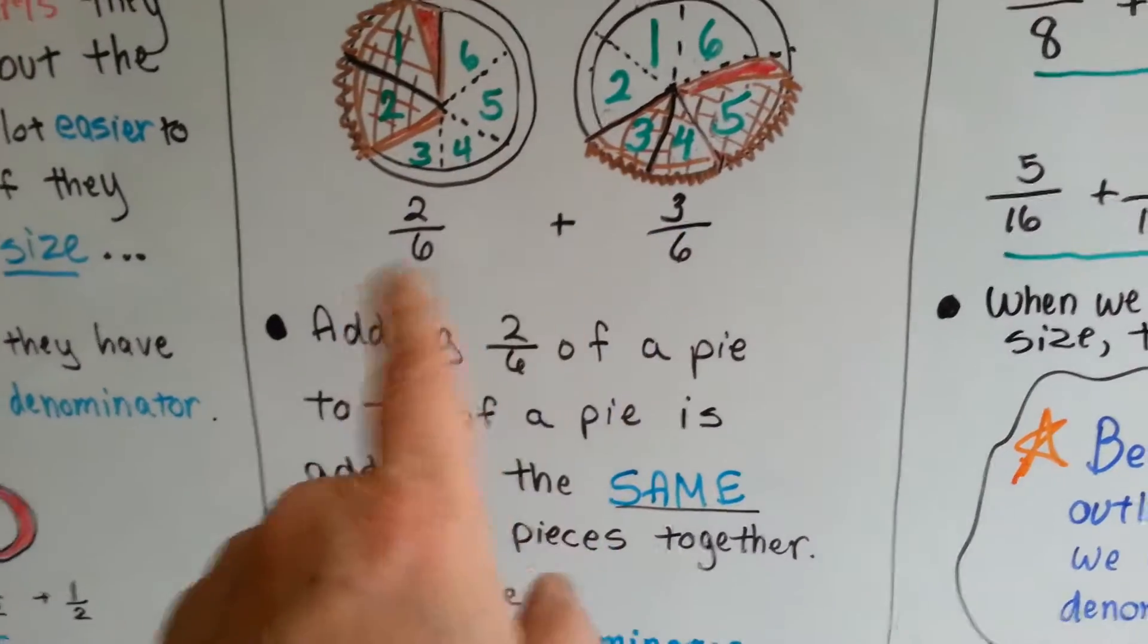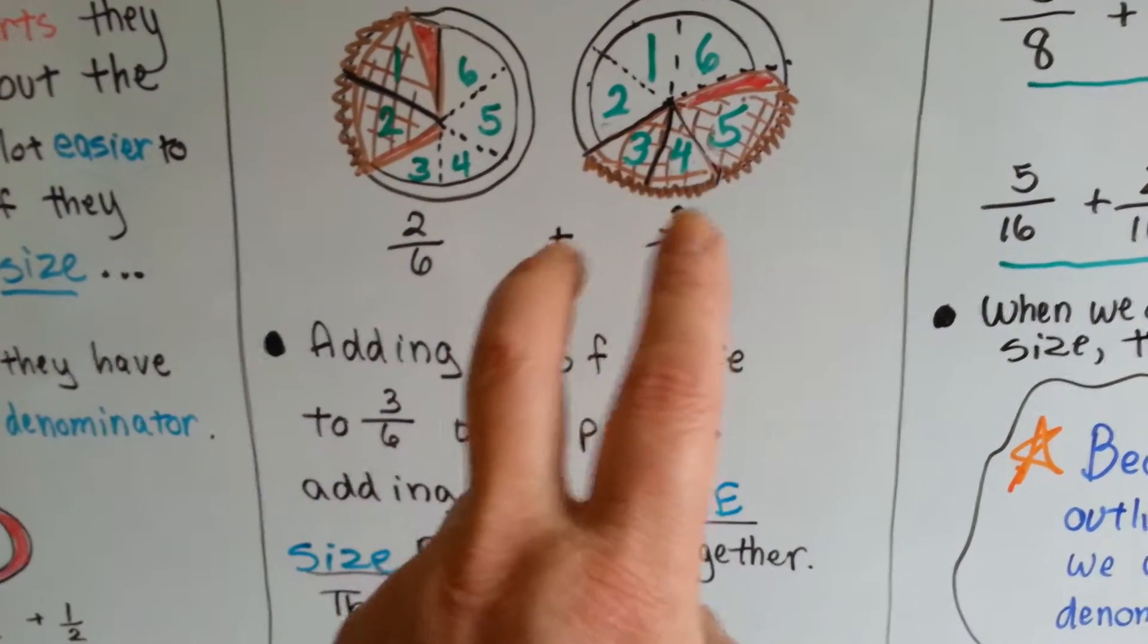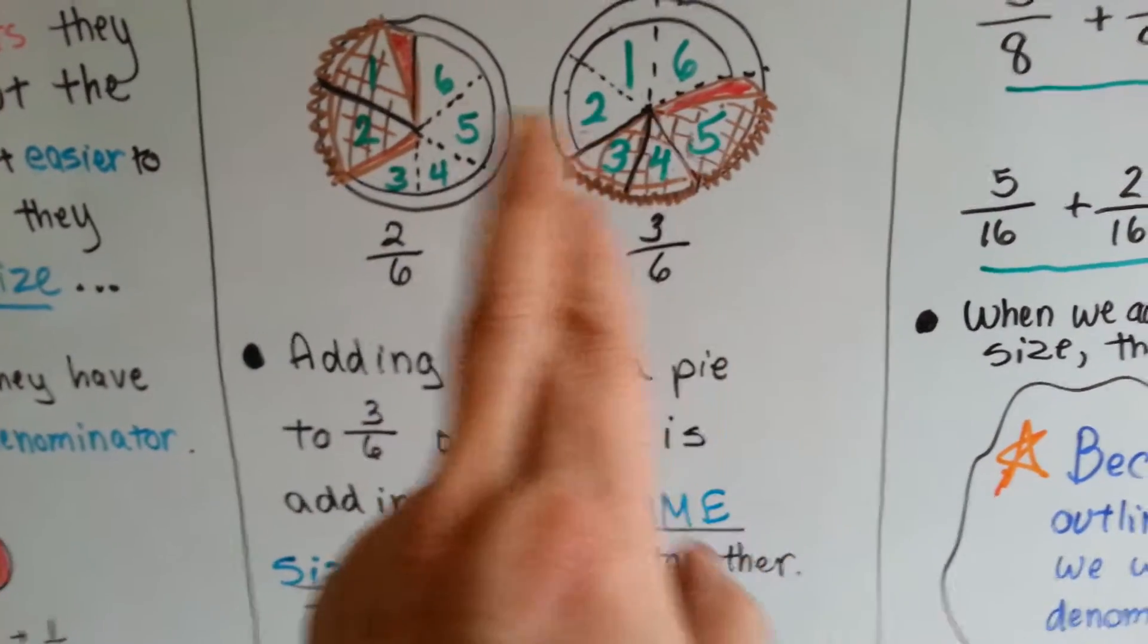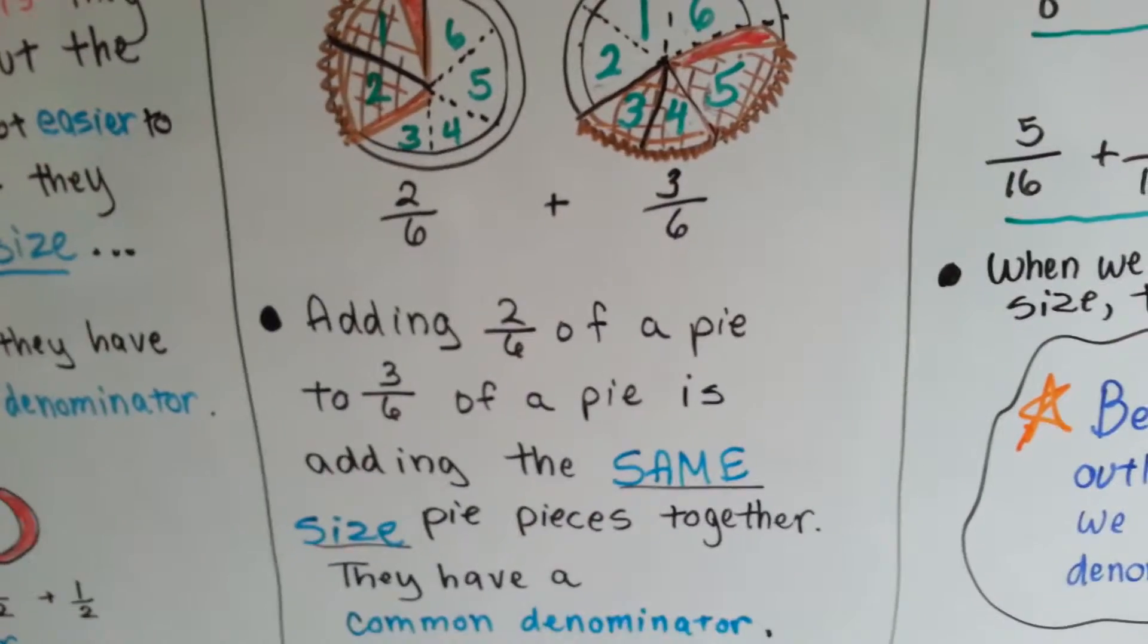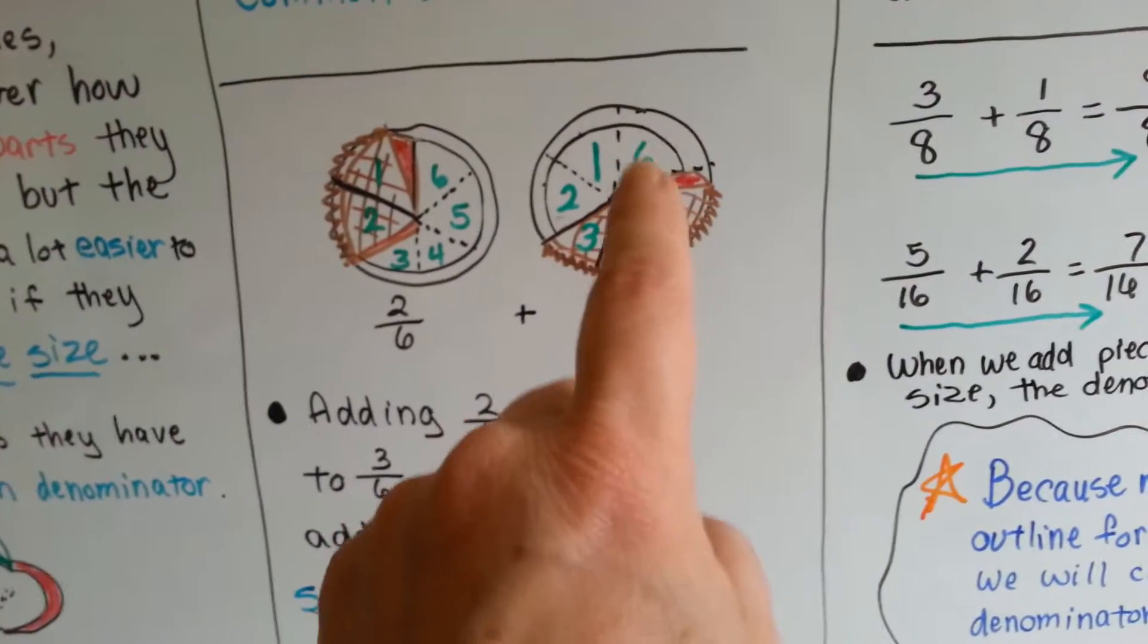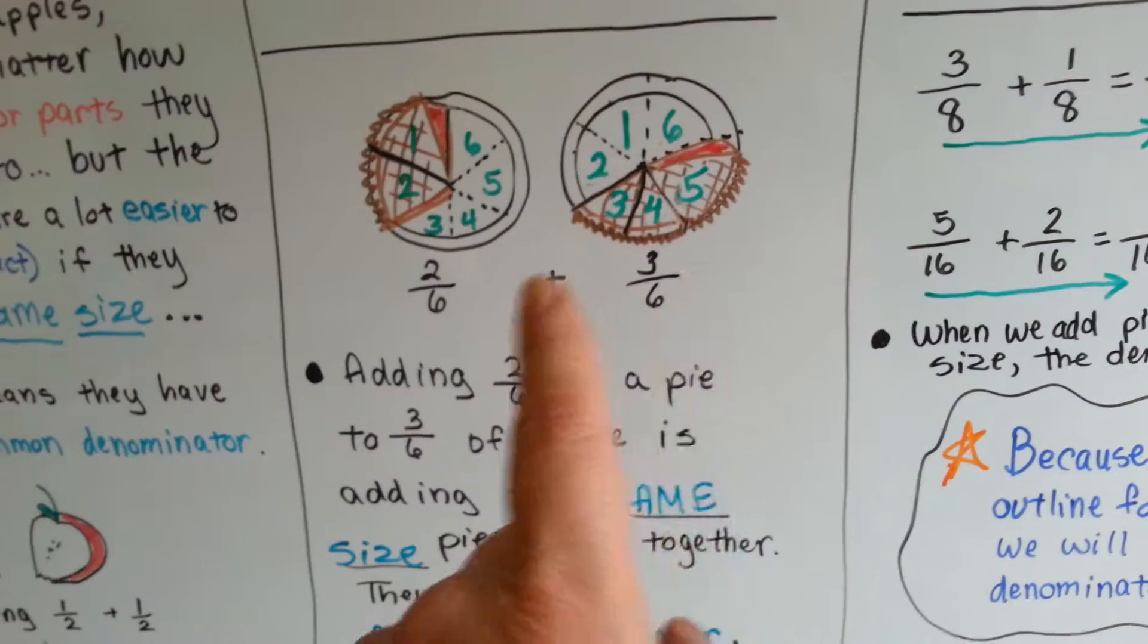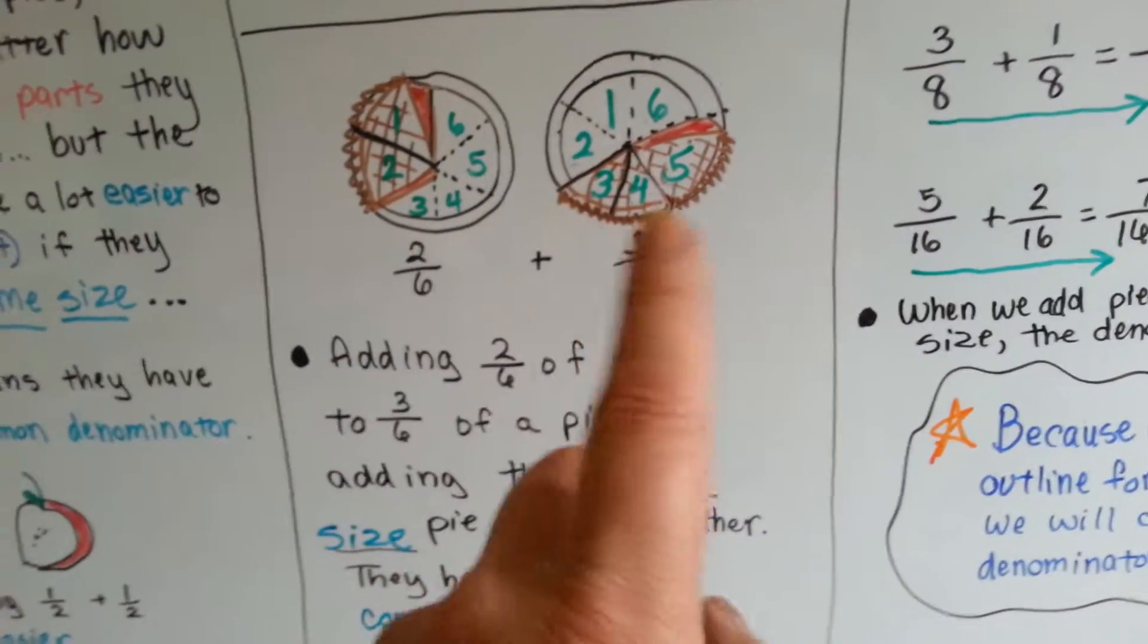Adding the two-sixths of the pie to the three-sixths of the pie is adding the same size pieces together. They have a common denominator. We're just putting these three pieces into that pan. They'll end up being one little piece missing. It'll be five-sixths of a pie. Two plus three.